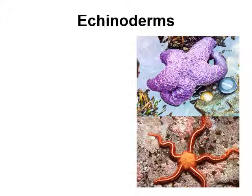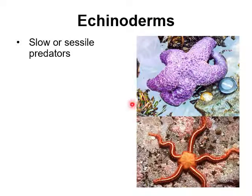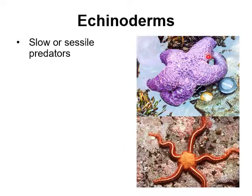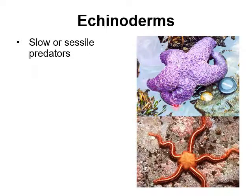The next group of animals are the echinoderms, which include sea stars and their relatives. Sea stars are quite slow and are actually predatory — the ochre sea star, for example, will envelop mussels, pull the two shells apart, and eat the soft material inside. Sea stars are strong enough to pry open the shells of bivalves like mussels.